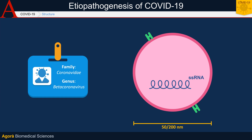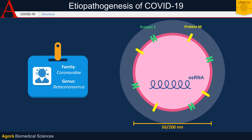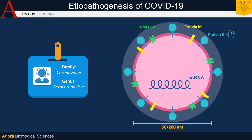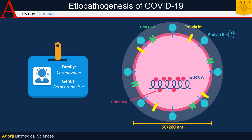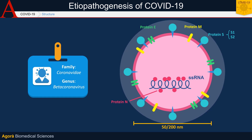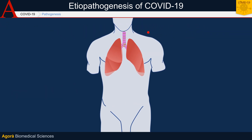It has a diameter of 50 to 200 nm and is made up of four basic types of proteins: the E-protein, or envelope, and M-protein membrane, which form the envelope of the virus; the S-protein spike, which contributes to building up the envelope and is formed by two subunits, S1 and S2, and is also responsible for binding to the host cell; and the N-protein nucleocapsid, which is associated with the RNA and stabilizes it.